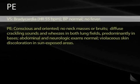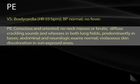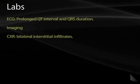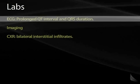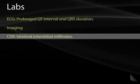On physical exam, the patient has bradycardia with heart rate of 55, normal blood pressure, no fever. He is conscious and oriented, no neck masses, but has diffuse crackles and wheezes in both lung fields, predominantly in the bases. His abdominal and neurologic exams are normal. He has violaceous skin discoloration in sun-exposed areas. Labs show a prolonged QT interval and QRS duration, and imaging shows bilateral interstitial pulmonary infiltrates.